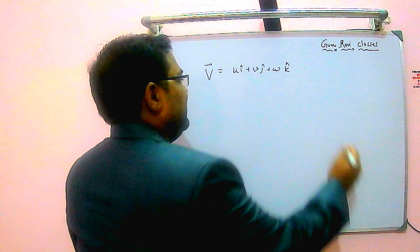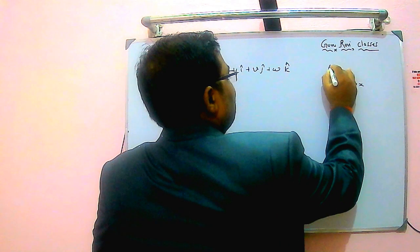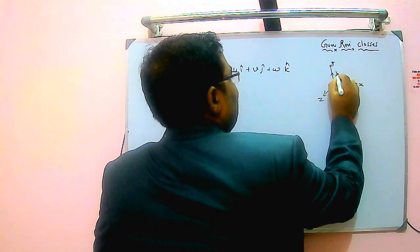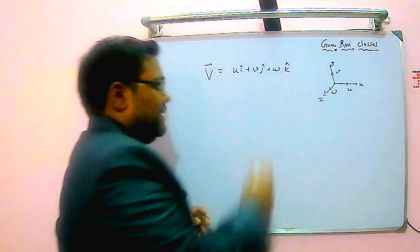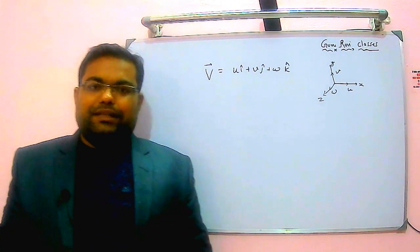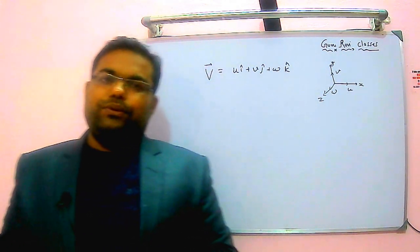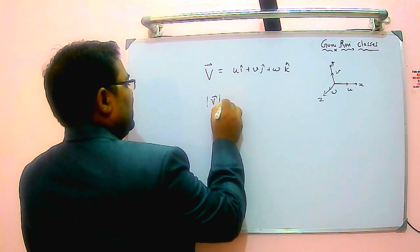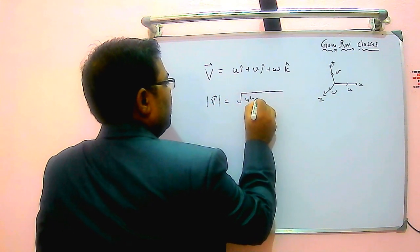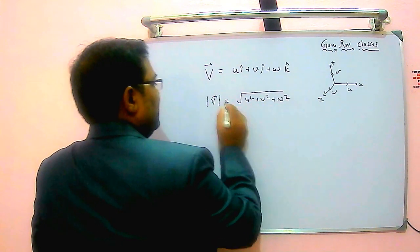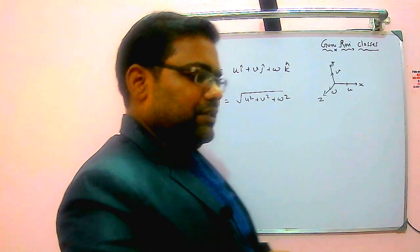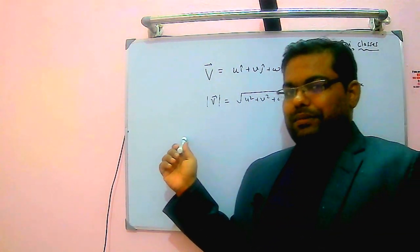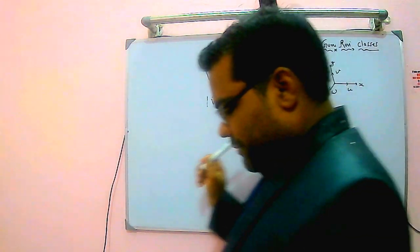So if x, y, and z are the axes, in the x-direction it is u, y-direction it is v, and z-direction is w, represented by a velocity vector. If somebody wants to know the magnitude, just take the modulus: that is simply the square root of u² + v² + w². From the moment you know the velocity vector, you can basically check whether the given flow is possible or not.